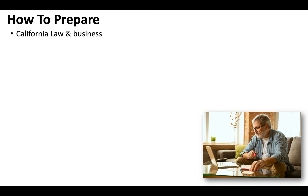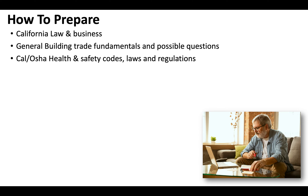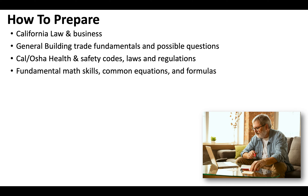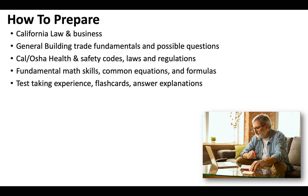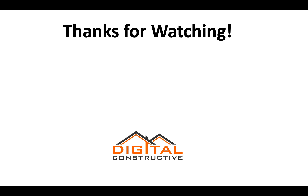When it comes to preparing for your General B license exam, California law and business represents about 50% of the test, so it's going to be extremely important that you go through all of the different sections of the law exam. Know your general building trade fundamentals. Cal OSHA health and safety codes, laws and regulations — California takes health and safety, environmental safety, and workers' rights extremely seriously, so it'll represent a significant portion of your exam. Have your fundamental math skills down — know the common equations and formulas. Timed exams with flashcards and answer explanations are extremely helpful. Walkthroughs of the exam with licensed general contractors and lawyers will help you decipher the language and understand not only what you need to pass the test, but also how to run a profitable general contracting business in California. All of this is included with our General B license course.